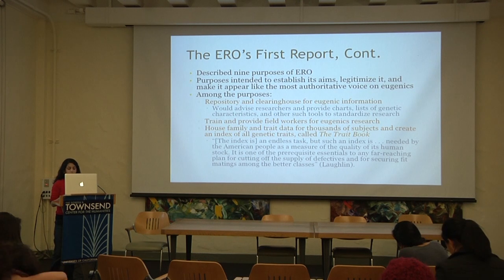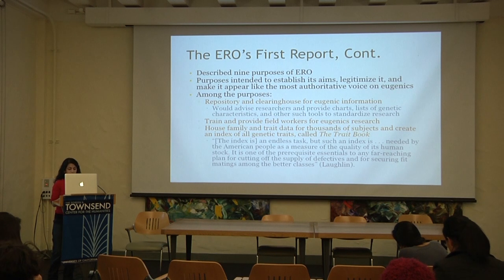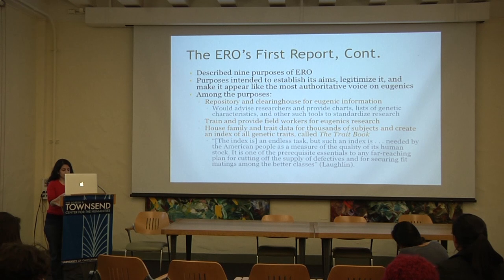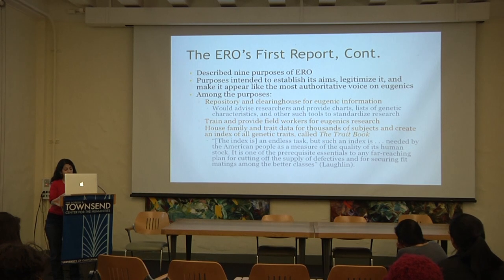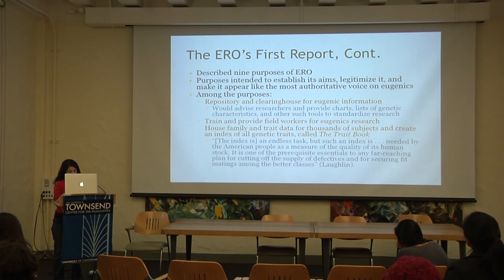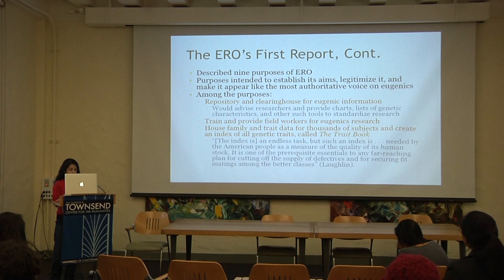The ERO would advise researchers, provide charts and lists of specific characteristics, and supply tools to standardize research. It would also train and supply field workers. To further standardize research, the ERO created an analytical index of the traits of American families called the Trait Book — based on an expansive decimal system that attached numeric values to certain traits. For example, the number 4598 would stand for ability at chess playing. This attempt at classification of hereditary fitness would add to the appearance of scientific legitimacy. Laughlin called the index 'an endless task,' but said it was 'needed by the American people as a measure of the quality of its human stock.'